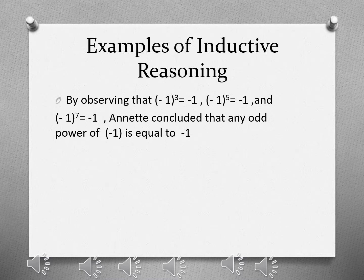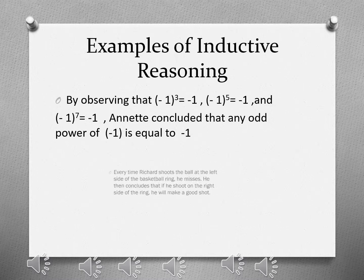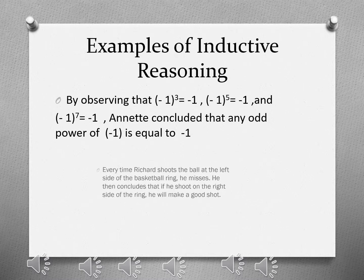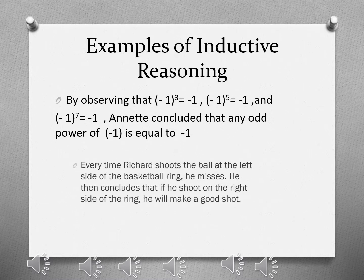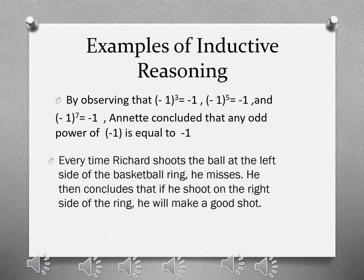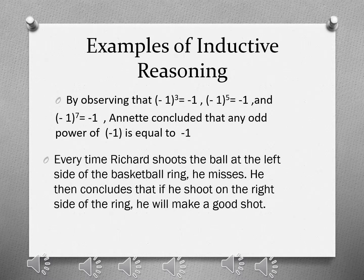Another example of inductive reasoning: every time Richard shoots the ball at the left side of the basketball ring, he misses. He then concludes that if he shoots at the right side of the ring, he'll make a good shot. This argument uses inductive reasoning since the conclusion made by Richard is constructed based on his observation.